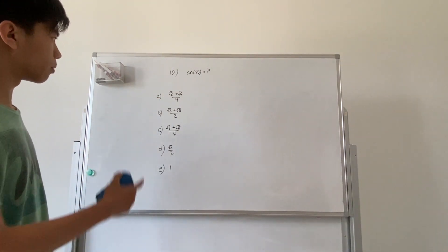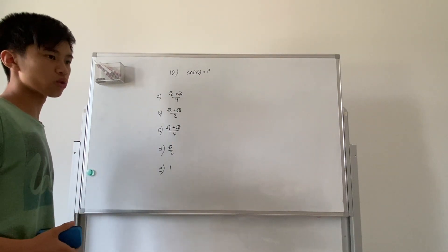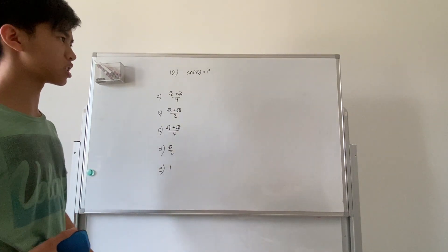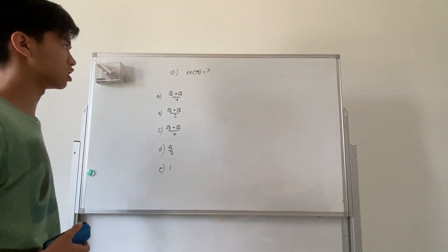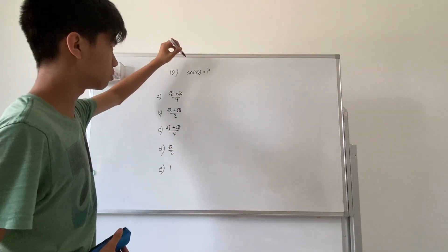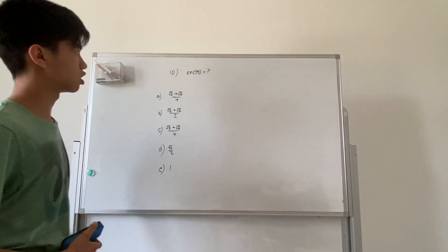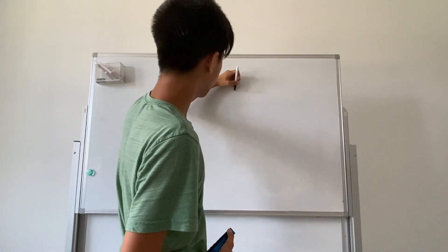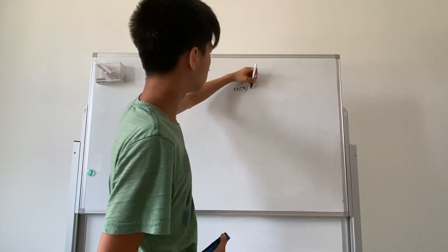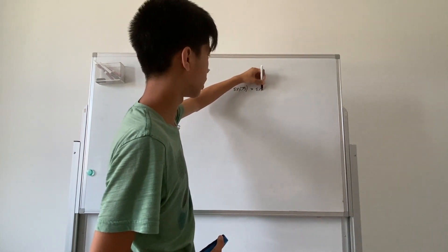If you remember from the lecture notes, you were supposed to memorize to the best of your ability some trig identities. And what this is screaming right here is trig identities. Sine of 75 looks like you could use an angle additive identity.